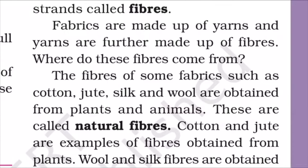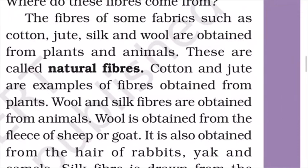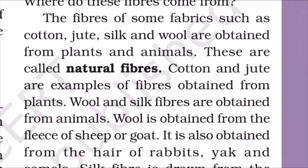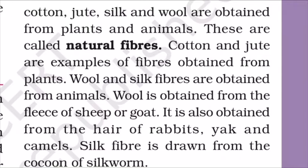Where do these fibers come from? The fibers of some fabrics such as cotton, jute, silk, and wool are obtained from plants and animals. These are called natural fibers. Cotton and jute are examples of fibers obtained from plants. Wool and silk fibers are obtained from animals. Wool is obtained from the fleece of sheep or goat.